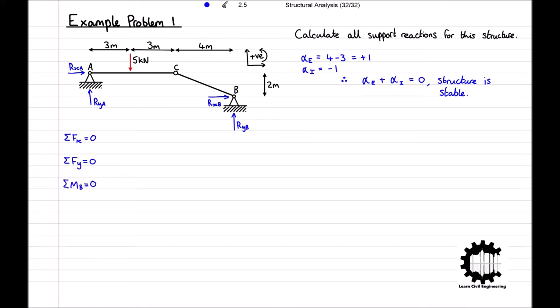Now we just need to work through the equations to find the unknown support reactions. Starting with equation four, as that only has one unknown, rearranging for rya, we get rya equals five times three all divided by six, which equals 2.5 kilonewtons. We can now substitute this value into equation two to find ryb. Doing so and then rearranging for ryb, we get ryb equals five minus 2.5, which equals 2.5 kilonewtons. Next, we will substitute our value for rya into equation three and then rearrange for rxa, giving us rxa equals five times seven minus 2.5 times ten all divided by two, which equals five kilonewtons. And finally, we will substitute this value into our first equation and rearranging for rxb, we get rxb equals negative five kilonewtons.